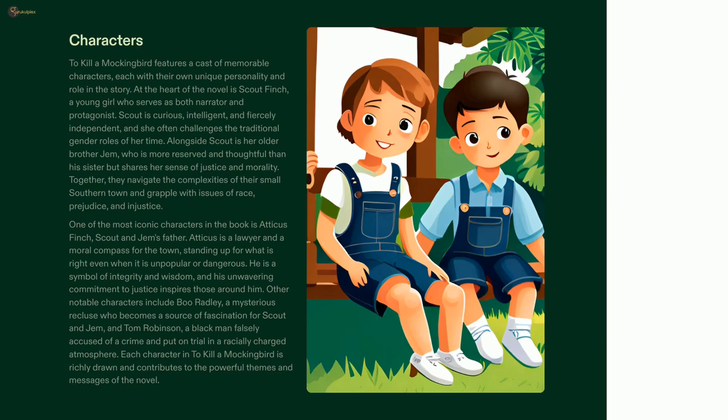Another famous character is Boo Radley, a mysterious recluse who fascinates Scout and Jem. Tom Robinson is also a key character — a black man who is falsely accused of a crime and put on trial in a racially charged environment. Each character in To Kill a Mockingbird is written with depth and complexity, making it a timeless classic.